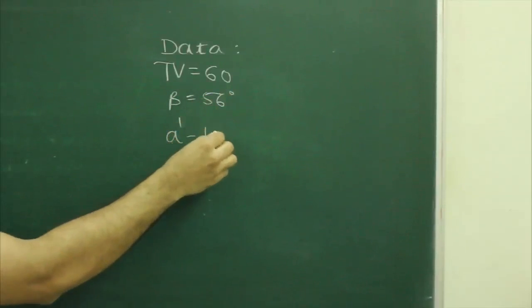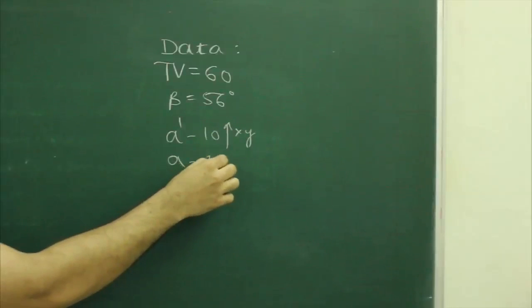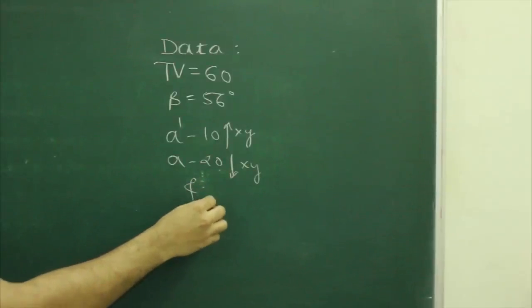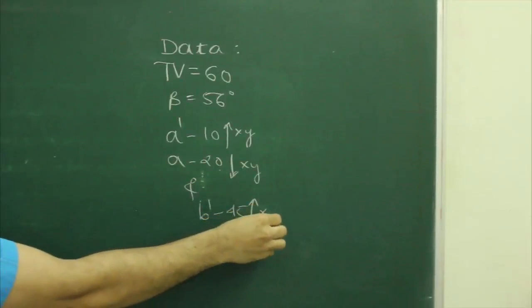D dash is 10 mm above XY line, A is 20 mm below XY line, and B dash is 45 mm above XY line.